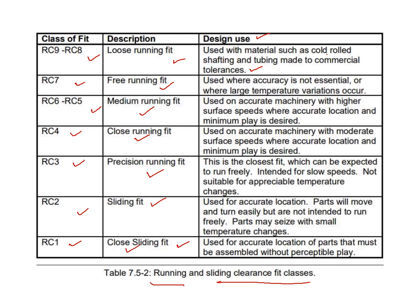For close sliding fits, they are used for accurate location of parts without perceptible play — for example, a bearing and shaft assembly. Sliding fits are used for accurate location; parts will move and turn easily but are not intended to run freely. Parts may seize with small changes in temperature. You can also read the design uses for these fit types.